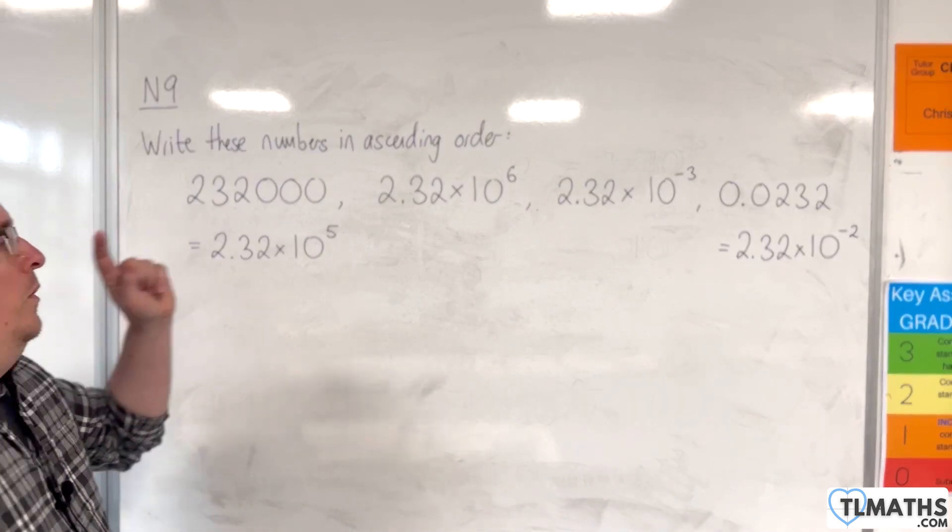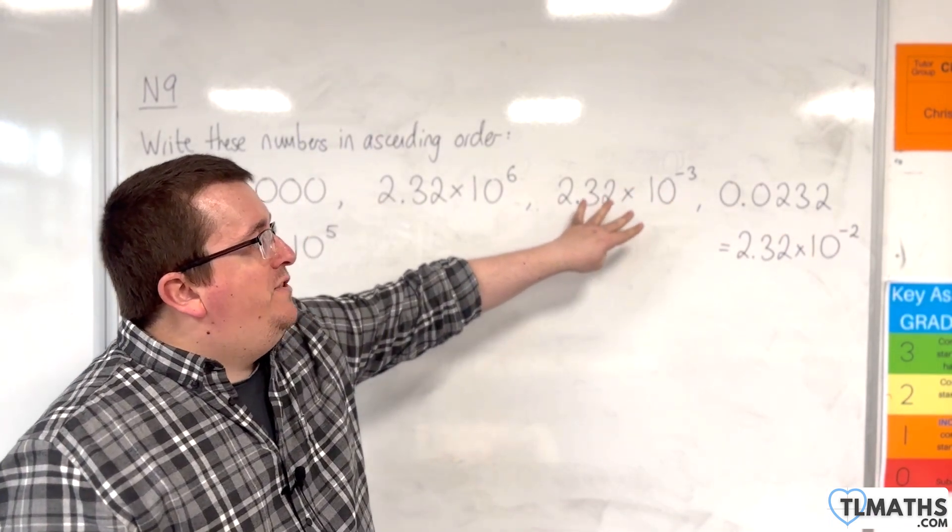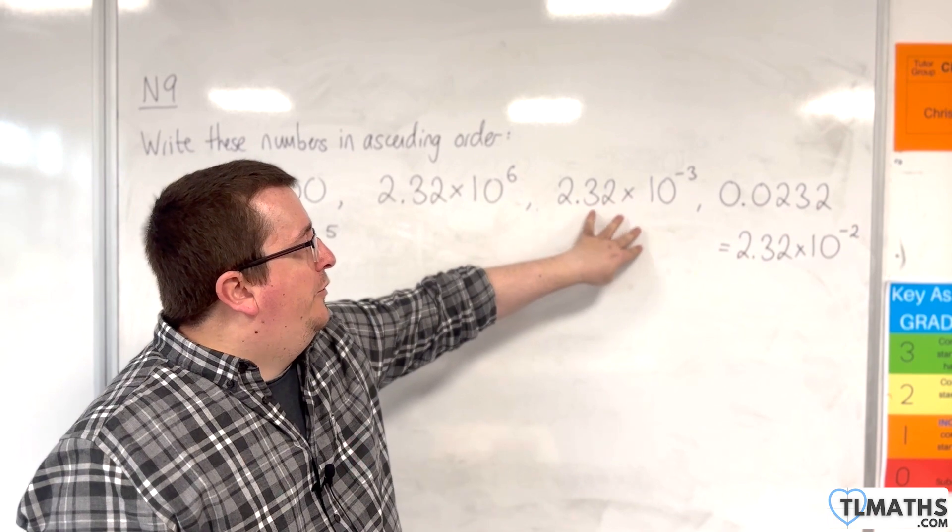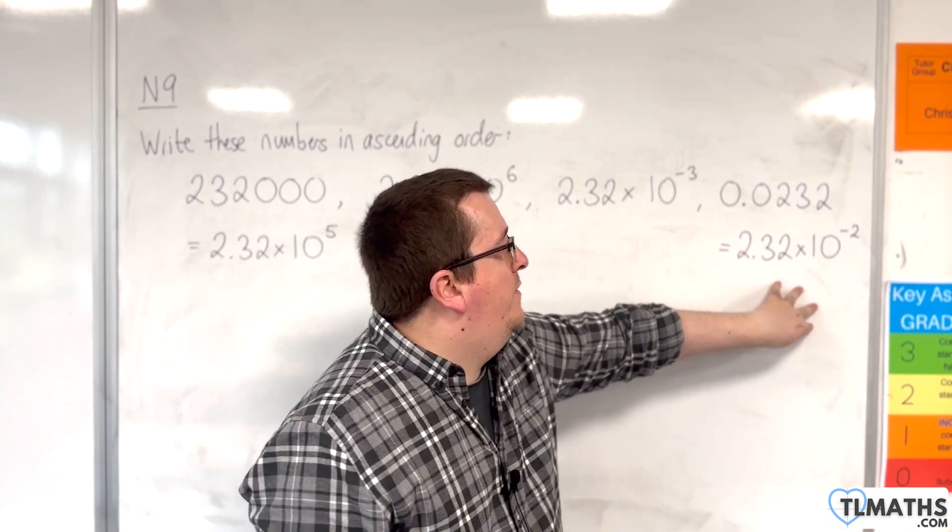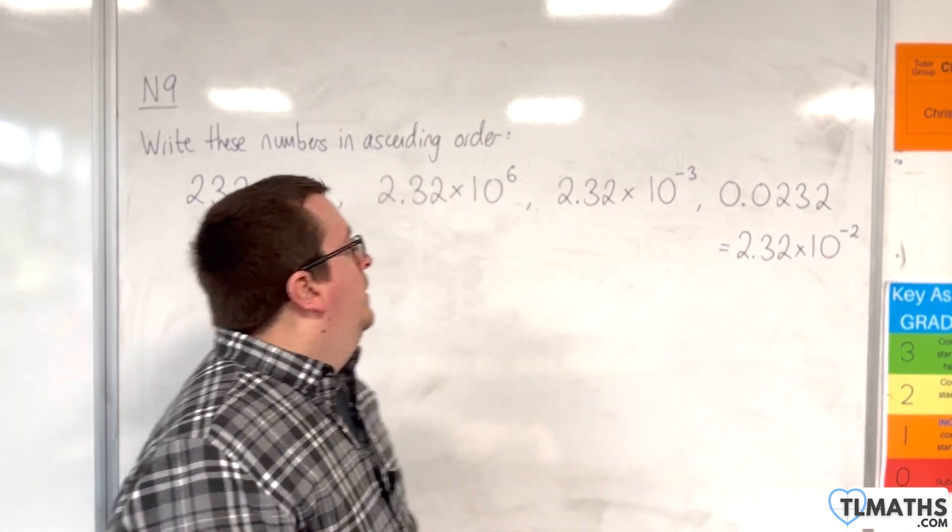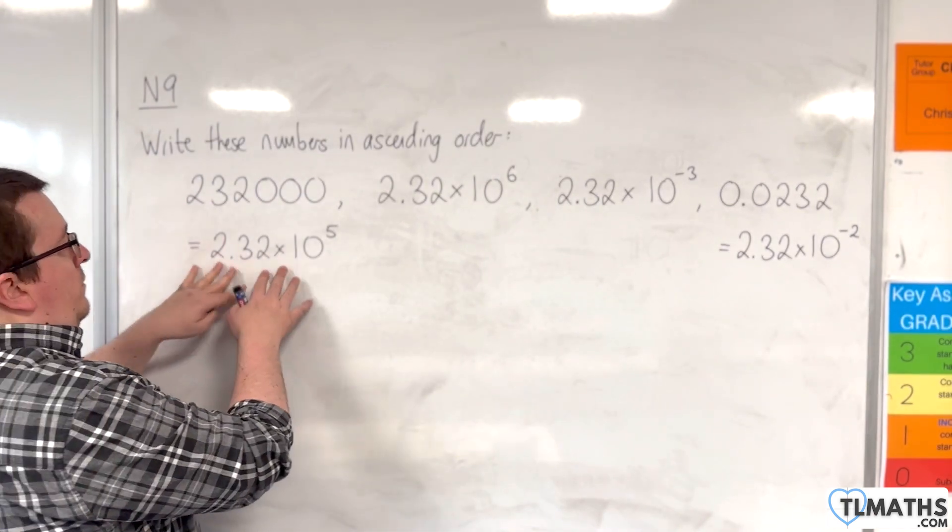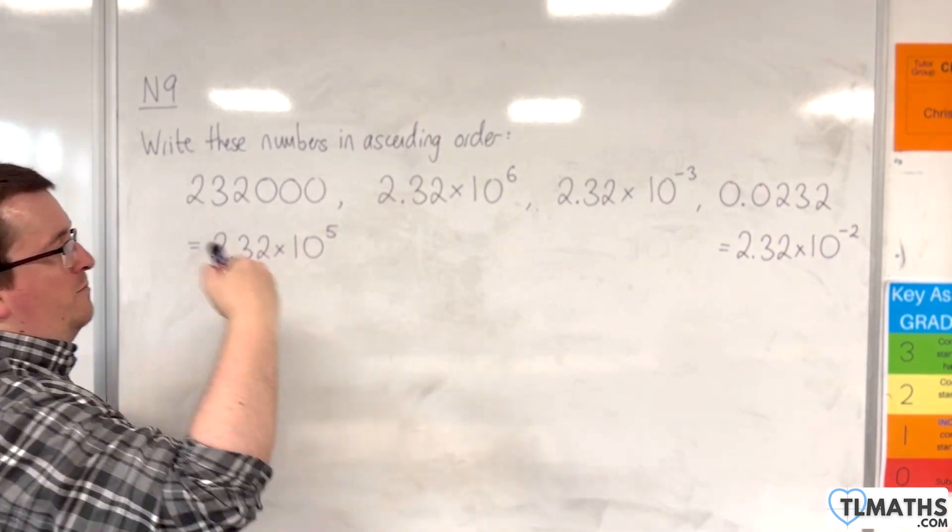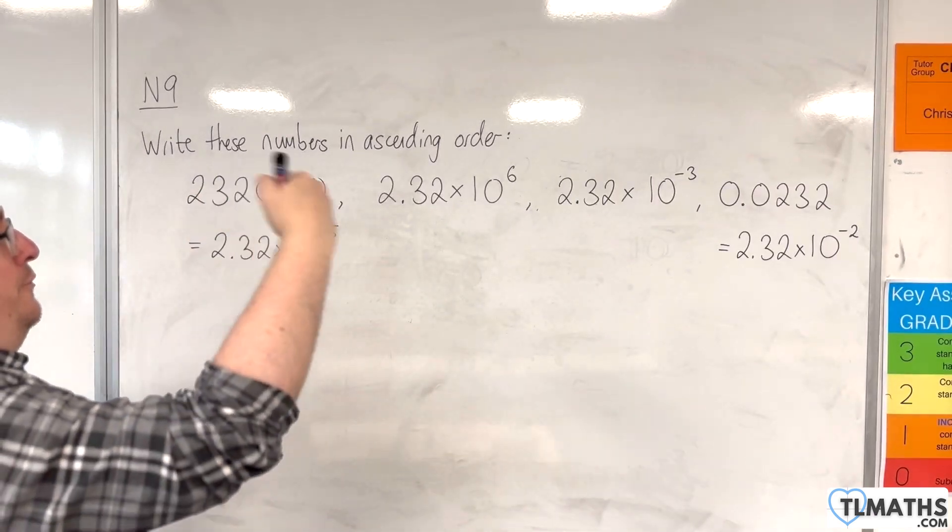the one with the most negative power will be the smallest, so that's got to be the smallest, then that one, then this one, then this one. Okay, so going from minus 3 to minus 2 to 5 to 6.